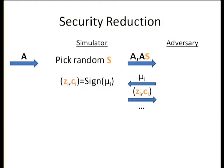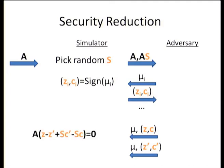For security, you want two properties. First, the signature should be independent of the secret key — you don't want the signature to leak anything about the secret key. Second, given the public key, the secret key is not unique. This second property is stronger than what you strictly need for Fiat-Shamir, but for lattices I think you need it.